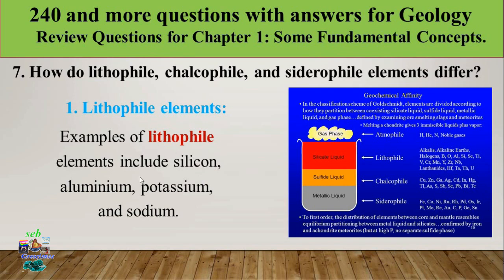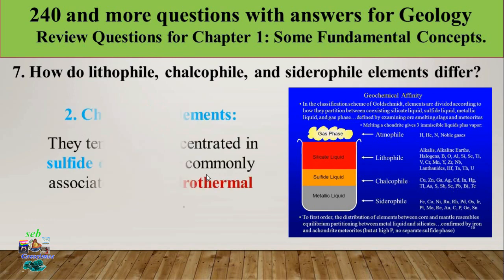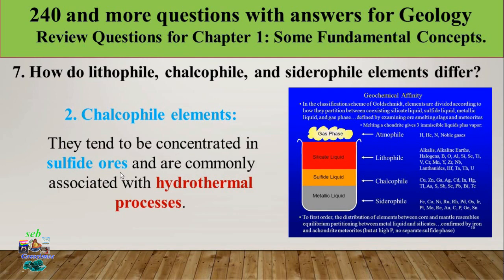Chalcophile elements have an affinity for sulfur and are found combined with sulfur-bearing minerals. They tend to be concentrated in sulfide ores and are commonly associated with hydrothermal processes. Examples of chalcophile elements include copper, zinc, and silver.